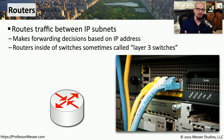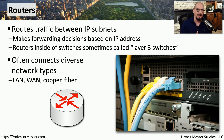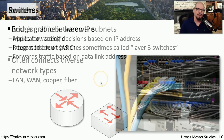Although routers can certainly connect IP subnets using the same topology, it's also common to use routers to connect different types of networks together. For example, the interfaces on a router might connect LAN, WAN, copper, and fiber connections all in one single device.